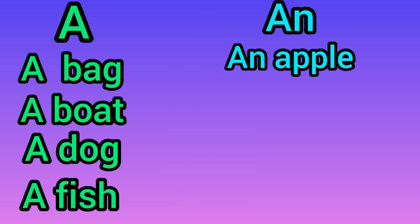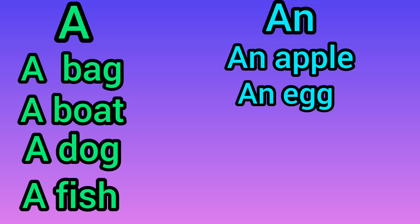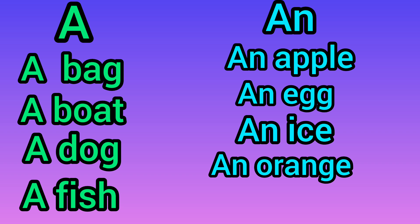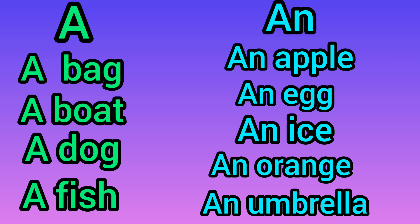AN. An apple — A is a vowel, so we will use AN. An egg — E is a vowel, so we will use AN. An ice — I is a vowel, so we will use AN. An orange — O is a vowel, so we will use AN. An umbrella — U is a vowel, so we will use AN.